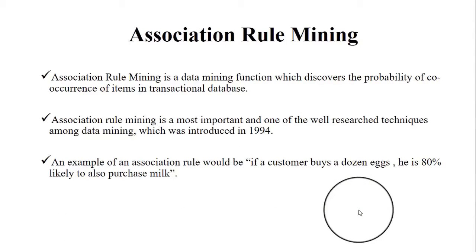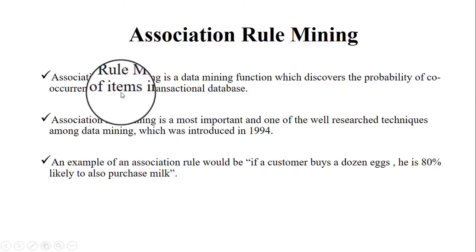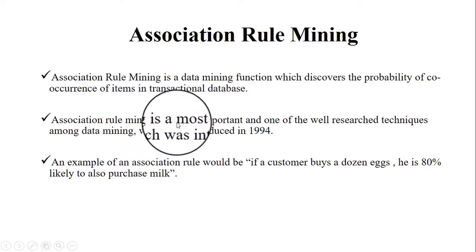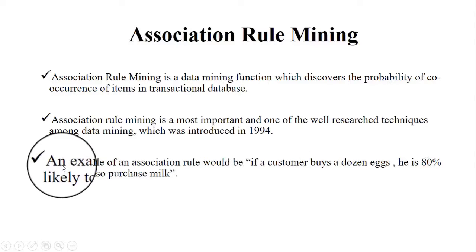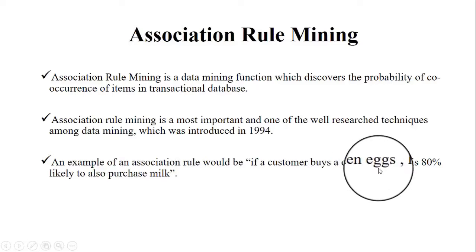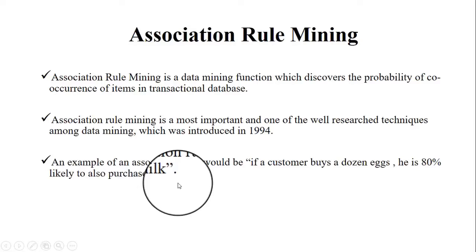What is association rule mining? Association rule mining is the most common technique used for market basket analysis. It is a data mining function which discovers the probability of co-occurrence of items in a transactional database, and was introduced in 1994. For example, if a customer buys a dozen eggs, they are 80% likely to purchase milk, and 60–80% likely to purchase bread as well.